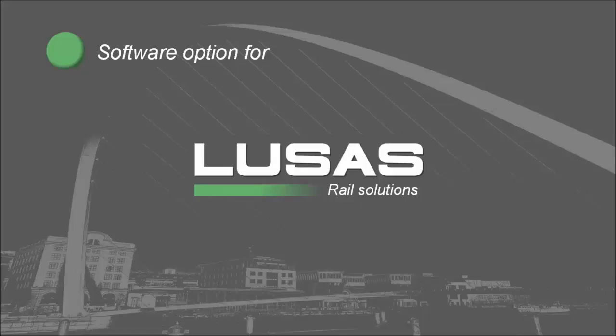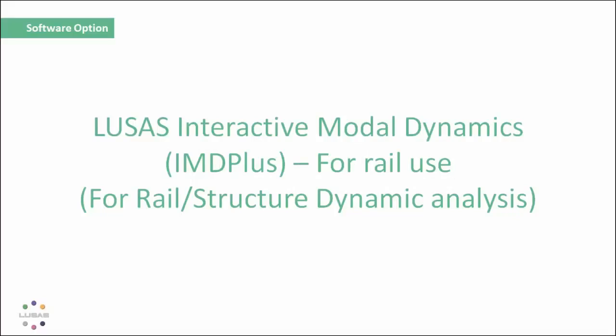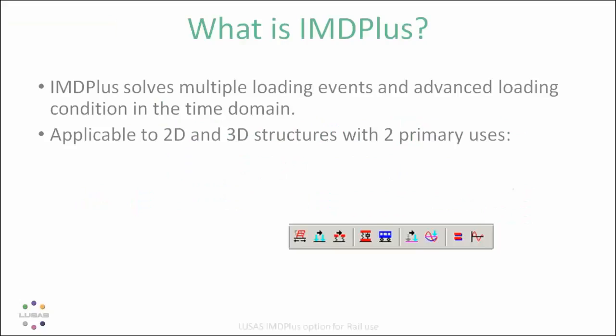There are two particular things we're going to talk about today. One is called Interactive Modal Dynamics, a tool we call IMD Plus. This is used for detailed rail dynamic analysis where we're looking at the structure and perhaps also the track system — it's more about detailed dynamic analysis. Later on we're going to talk about rail track structure interaction, which is slightly different.